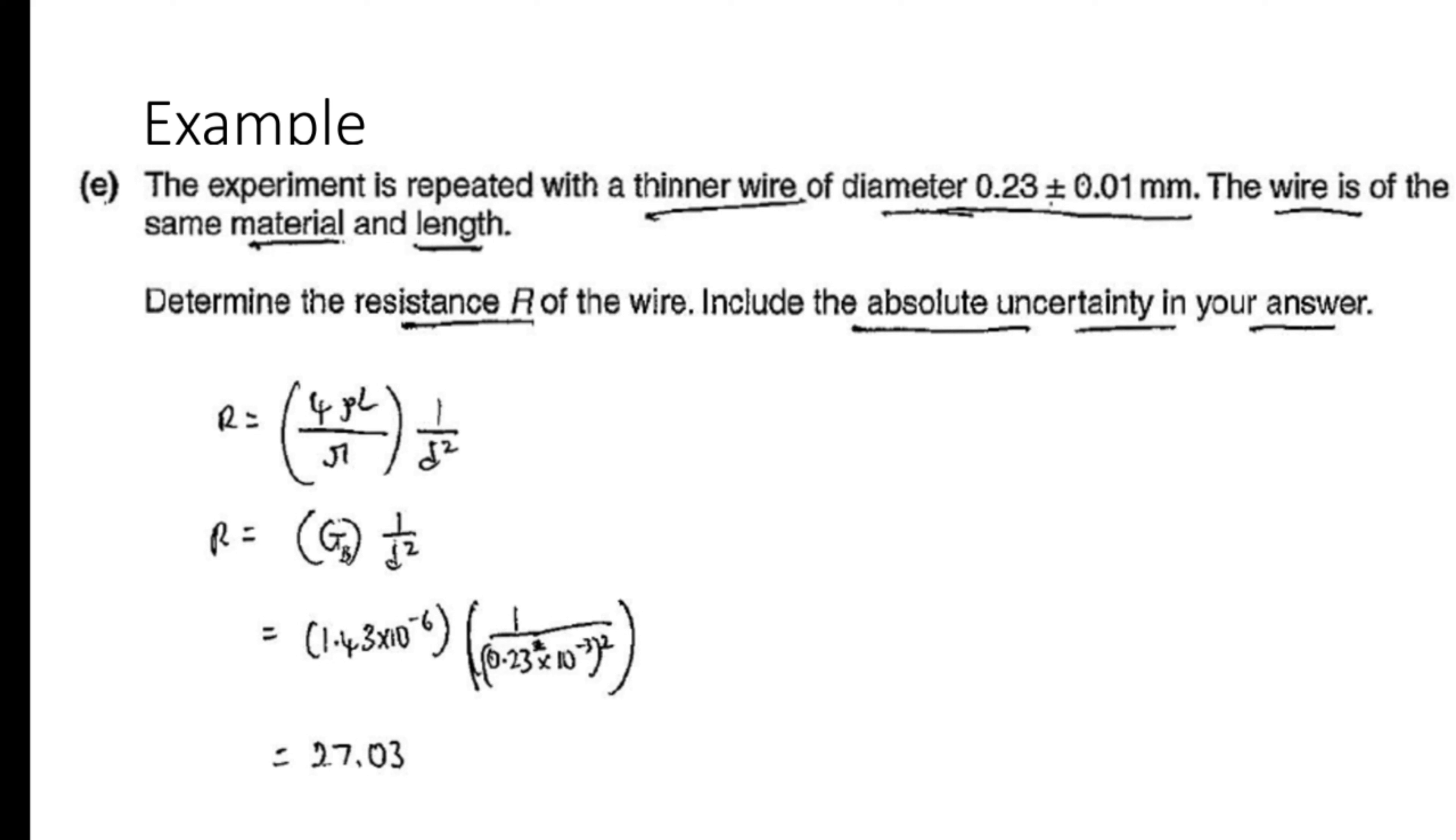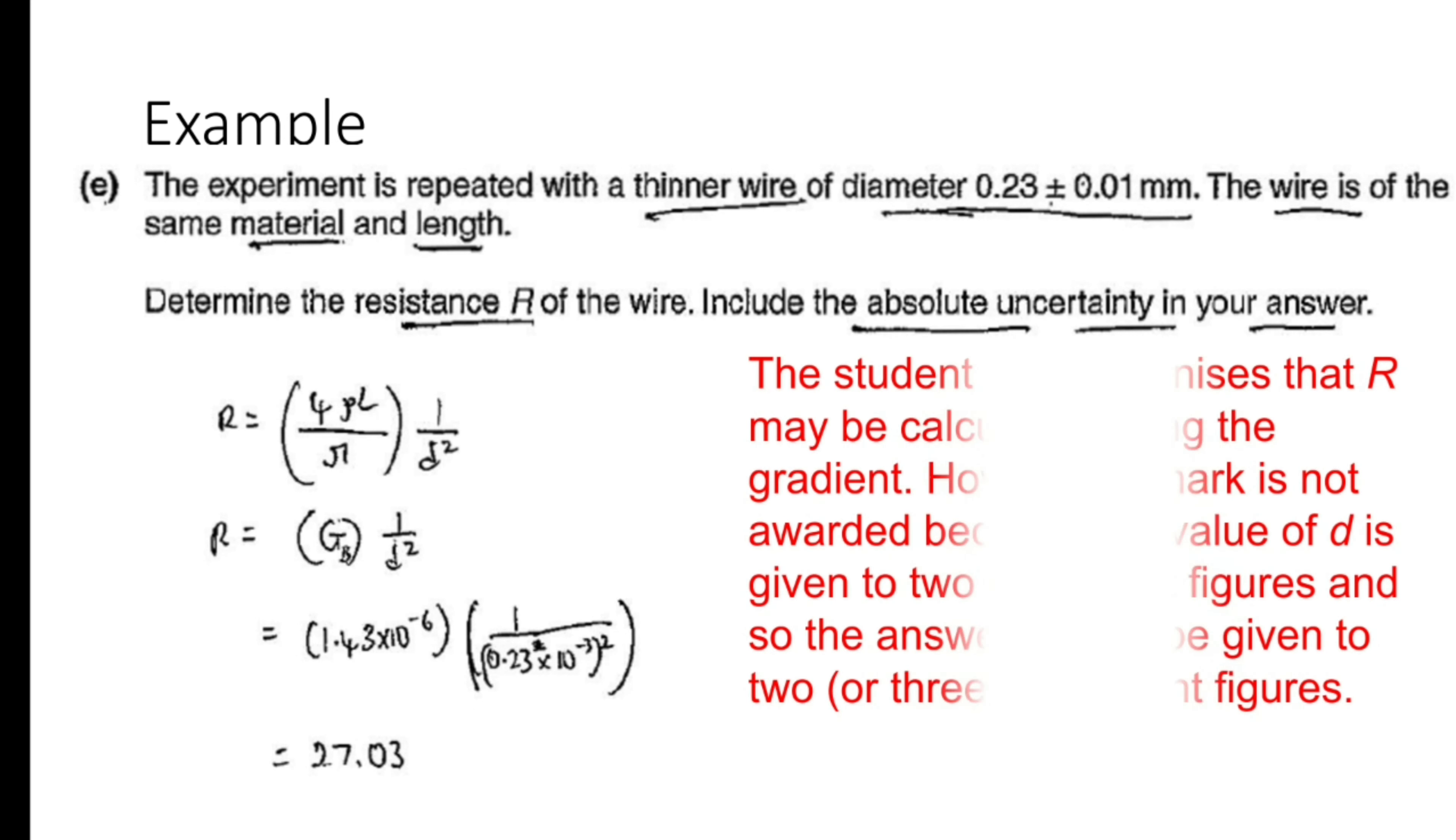The calculation of resistance has been done correctly but there was no marks. Why? Just see that. The student has recognized that R may be calculated using the gradient. However, a mark is not awarded because the value of D is given to 2 SF and so the answer should be given to 2 or 3 SF only. But if you look at here it is 4.